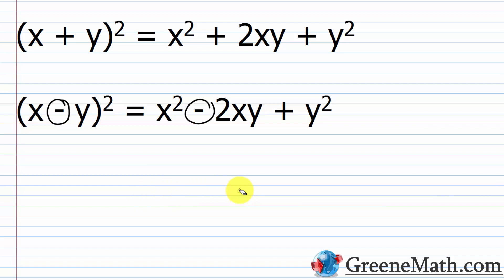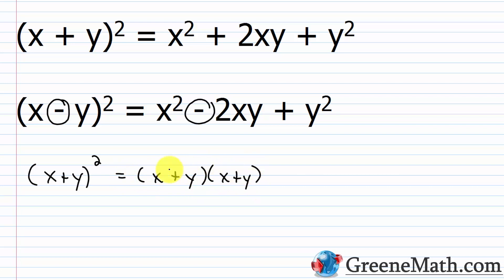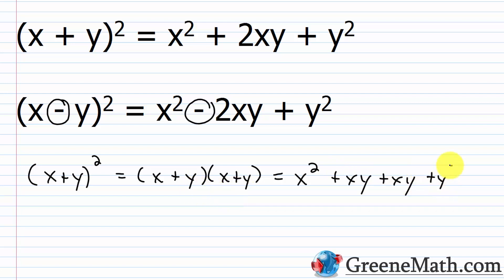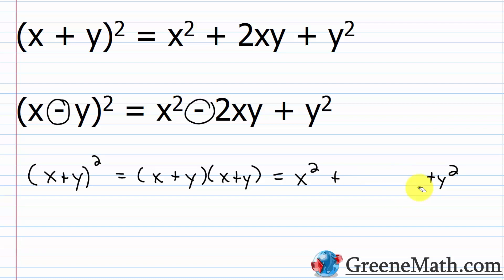If I foil out x plus y times x plus y: x times x is x², outer gives plus xy, inner gives plus xy, and the last term is plus y². Combining the middle terms gives 2xy, so the result is x² plus 2xy plus y². The way I remember this: the first term squared, the last term squared, and the middle is 2 times x times y.